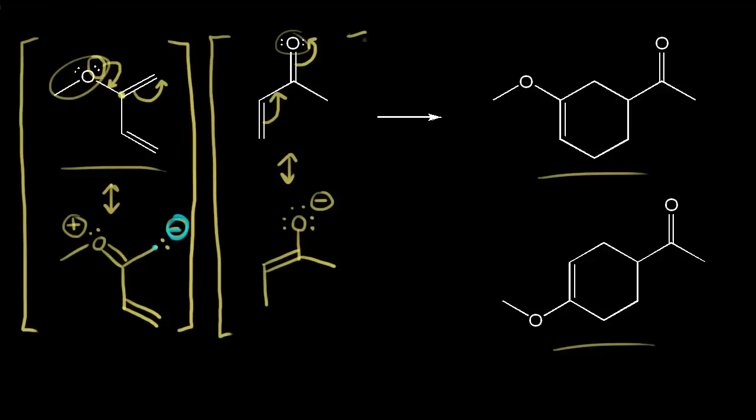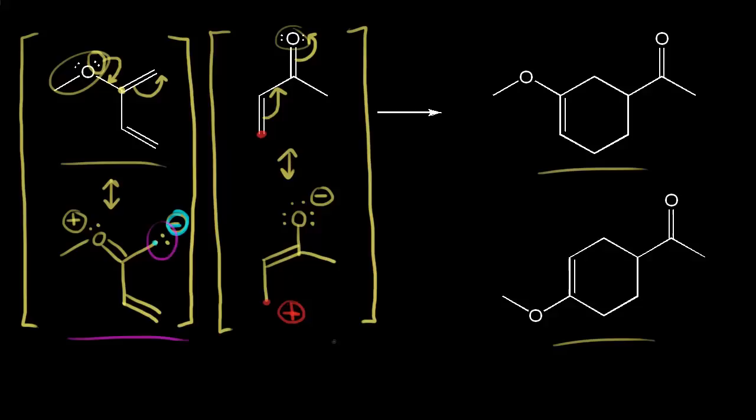And notice we took a bond away from this carbon, so this carbon down here gets a plus one formal charge. So our diene has a carbon that is electron rich, and our dienophile has a carbon that is electron poor. And we know that opposite charges attract. So we could just line up these two carbons, and that allows us to predict the regiochemistry for this reaction.